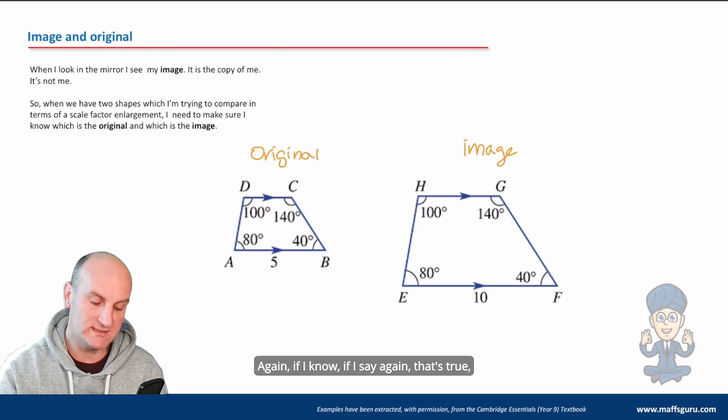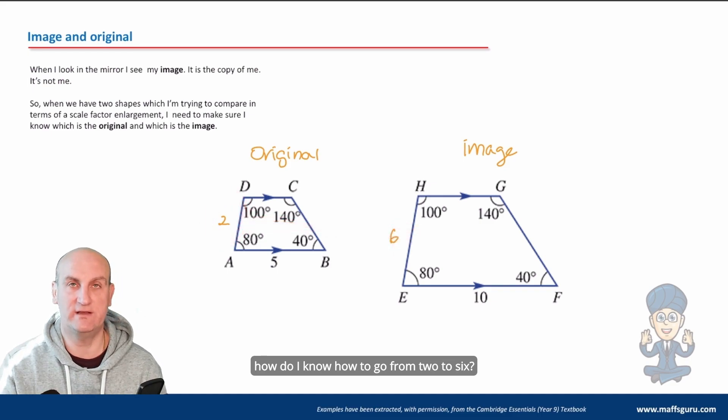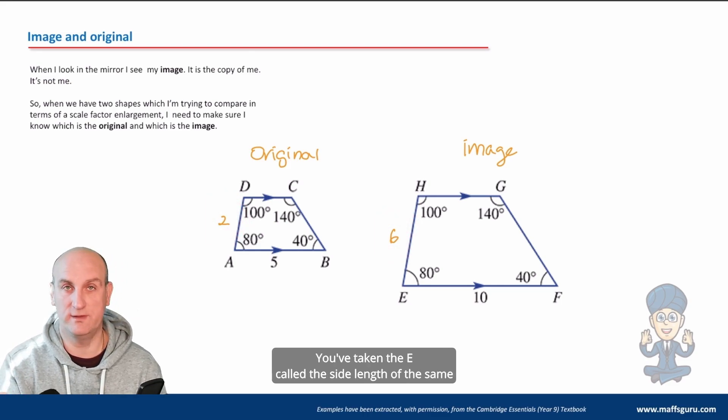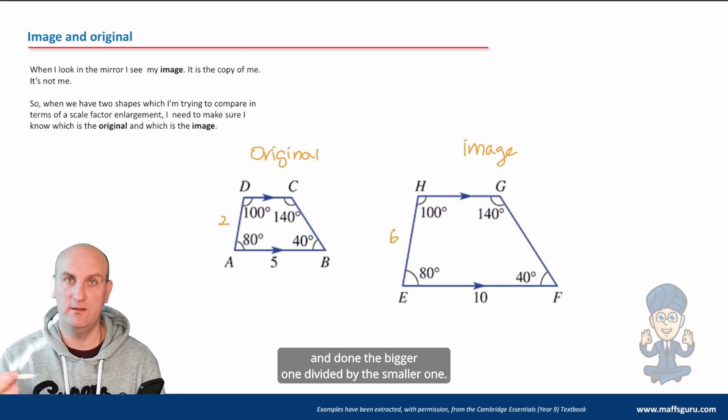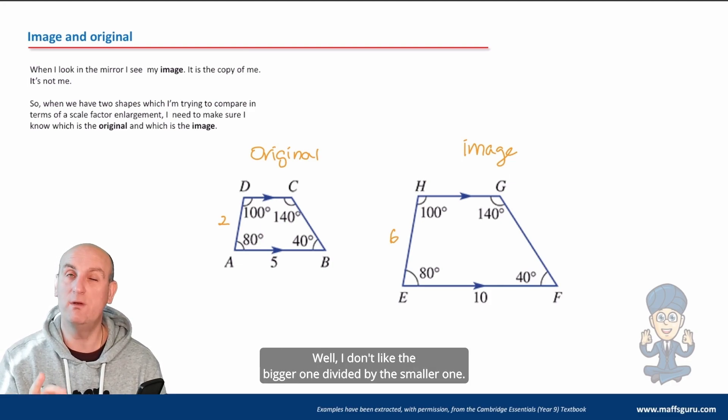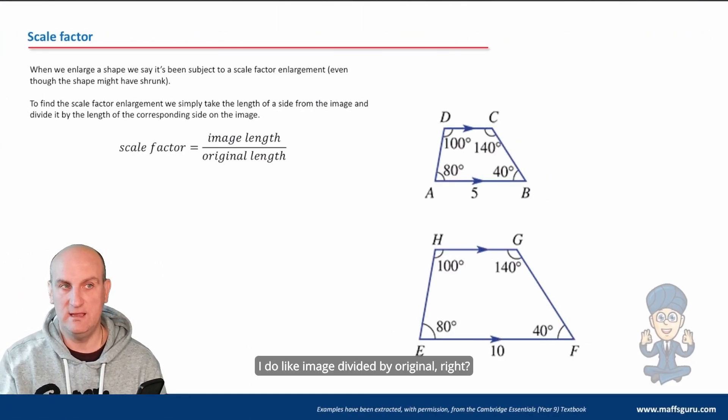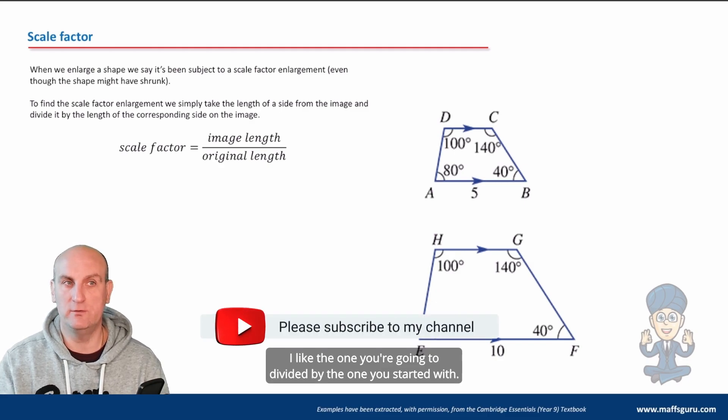If I say that's two and I know that one is six, how do I know how to go from two to six? Well, hold on a moment, probably you've done six divided by two, haven't you? You've taken the side lengths that are the same and done the bigger one divided by the smaller one. Well, I don't like the bigger one divided by the smaller one. I do like image divided by original. I like the one you're going to divided by the one you've started with.